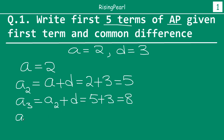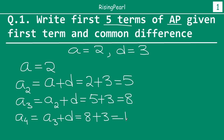So the fourth term similarly: we take the third term and we add the common difference to it to get the fourth term. So third term is 8 plus common difference is 3. So this will be 11.